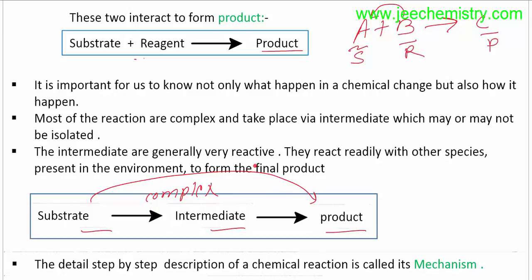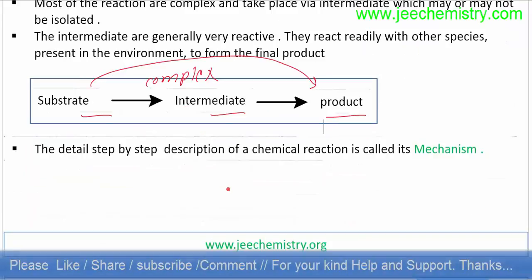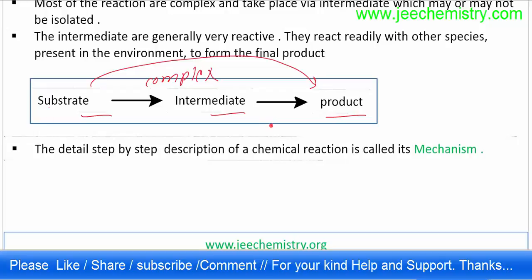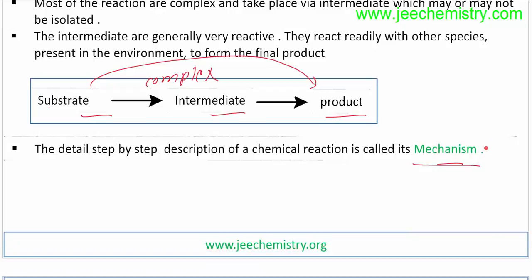Intermediates are generally very reactive; they react rapidly with other species present in the environment to form the final product. The detailed step-by-step description of a chemical reaction is called the mechanism. So if asked for the mechanism of an organic reaction, we must show each step: how the substrate converts to an intermediate and how the intermediate converts to the product.